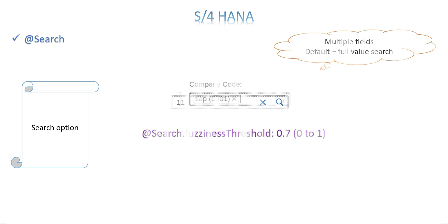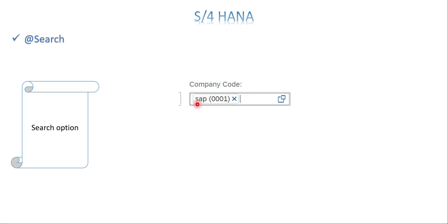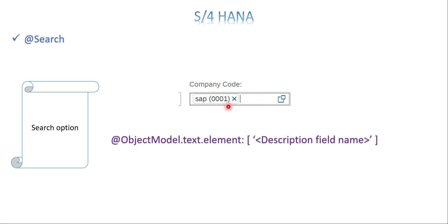One more thing - suppose a field has both a value and a text, for example plant, company code, or material. The user wants both the value and the description to appear after searching. For that, there is one more annotation called `ObjectModel.text.element`, and you provide the field name that carries the description or text. This is applicable for search as well as value help - it is one option where you can display both the description and the value.